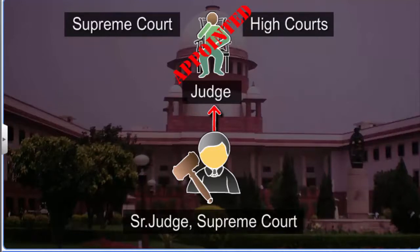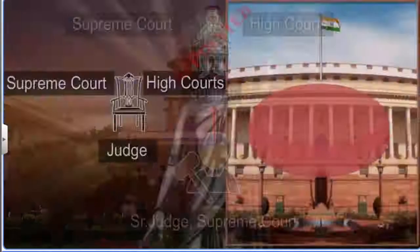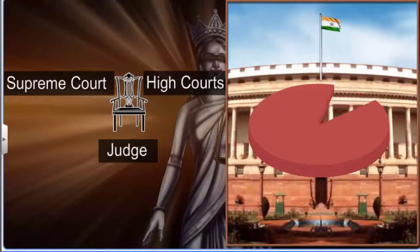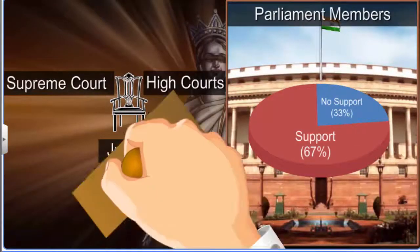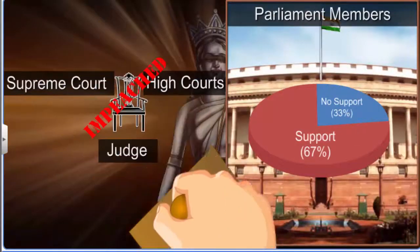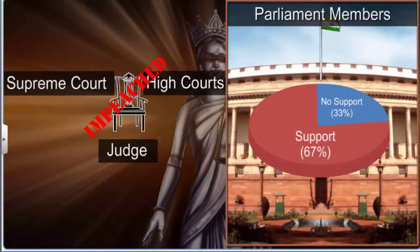A judge can be removed only when an impeachment motion is passed separately by a two-thirds majority of members of each of the two houses of Parliament.